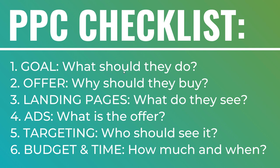To recap the checklist: Goal — what should customers do? Offer — what should they get? Landing pages — what do they see? Ads — what is the offer shown? Targeting — who should see it? Budget and time — how much are we spending and when is it running? When creating PPC advertising campaigns on any channel, go through this checklist to ensure you have a good offer that makes people take action on your website.